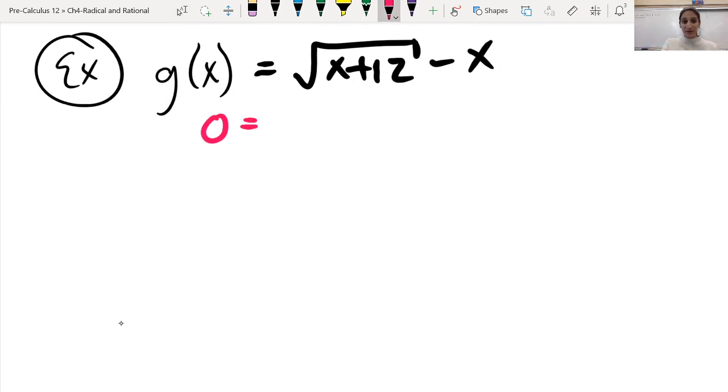So I want to start by setting this equal to 0 because I know I'm looking for the solution. And then I'd have root x plus 12 minus x.